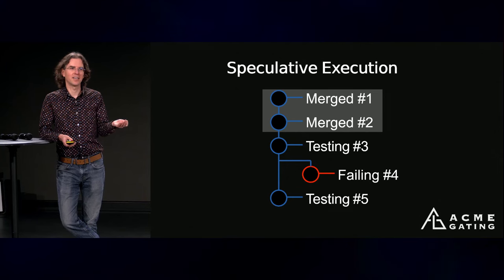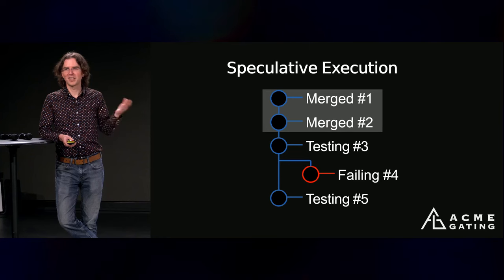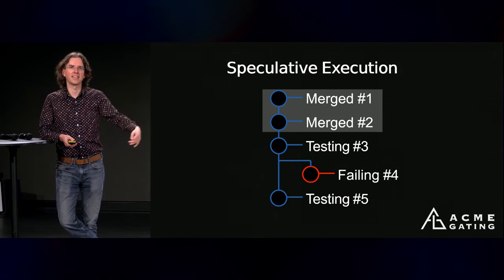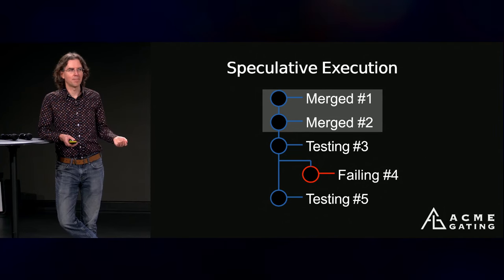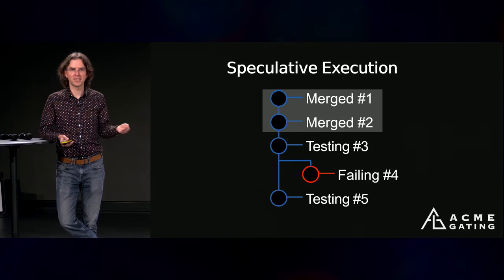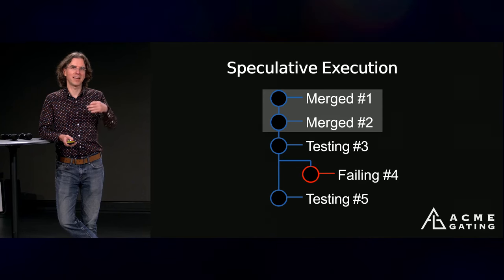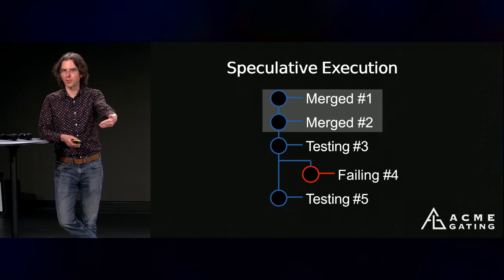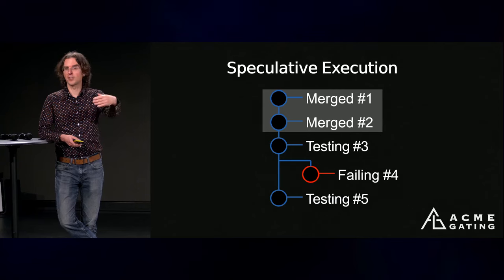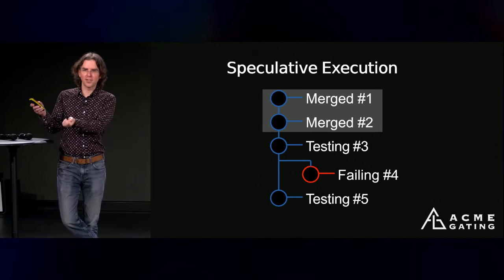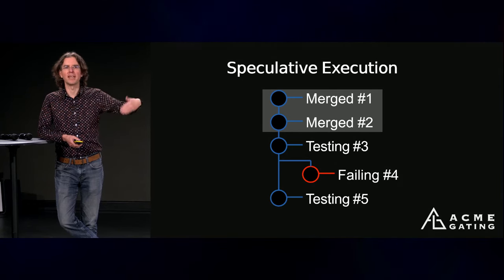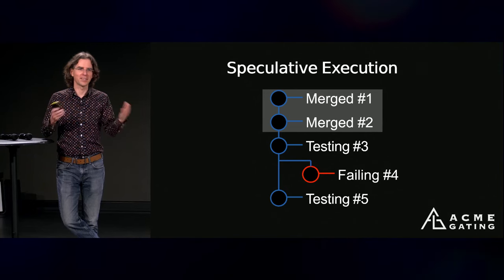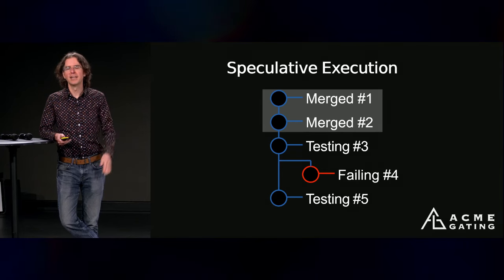The way we achieve this started with a naive approach: put changes in a queue and test them one at a time. That's slow, so we started doing optimistic speculative execution. If changes one and two pass their tests and merge, we're already testing three, four, and five. If change four starts failing, we move it out of the queue, rebase five on three, and keep things moving. Zuul continuously reshuffles the queue as changes pass or fail, keeping all jobs running in parallel to move the pipeline as quickly as possible.